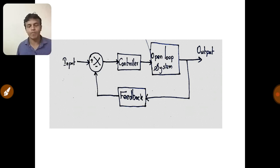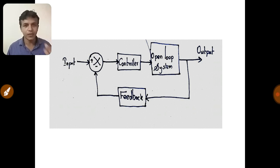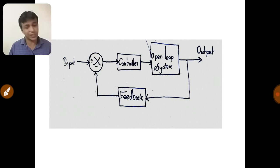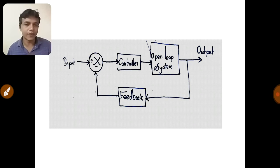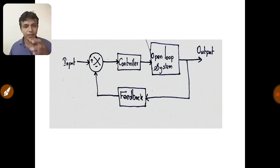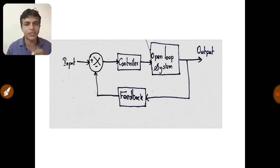Comparing open loop and closed loop, closed loop system is very advantageous, although it requires considering certain criteria. Closed loop is more advantageous but also more complex than open loop — that we have to accept. Now let us consider another example: the refrigerator. In the refrigerator, there is a compressor.